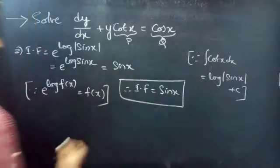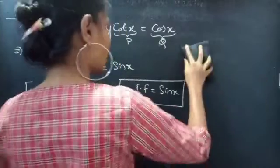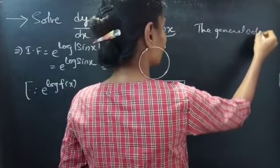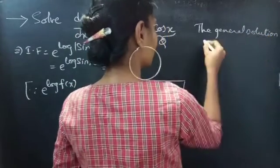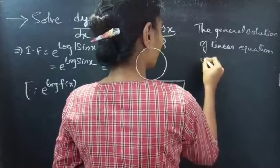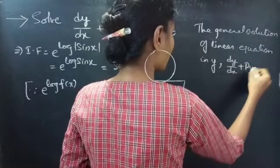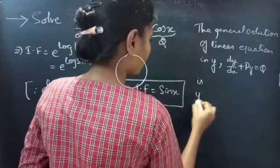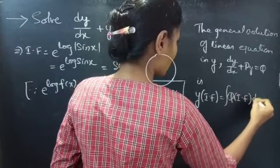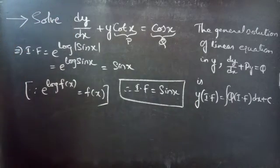Now we need to find the general solution to the given linear equation. We know that the general solution of the linear equation in the form dy/dx plus p·y equals to q is given by y into integrating factor equals to integral of q into integrating factor dx, plus c.